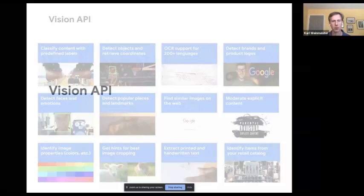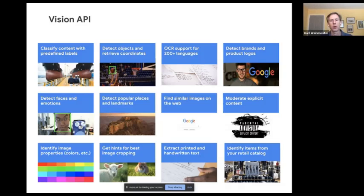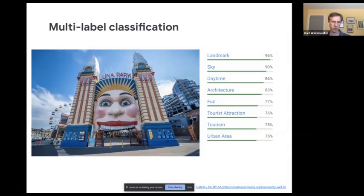The Vision API provides many services. A common use case is image classification — looking at an image and providing labels about what's in it. There's also object detection for locating objects within the image, OCR for extracting text, and several other capabilities. Here's a fun example: an amusement park in Sydney called Luna Park. The labels coming back correctly identify it as a landmark, and you also get other key elements — sky, daytime, architecture — each with a confidence score.